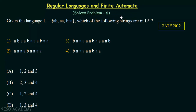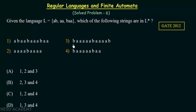In this lecture we will be discussing another solved problem from regular languages and finite automata. This question is from GATE 2012. It gives us the language L equal to {AB, AA, BAA}, and asks which of the following strings are in L* or the closure of L. We have four options and we need to find out which strings belong to L*.